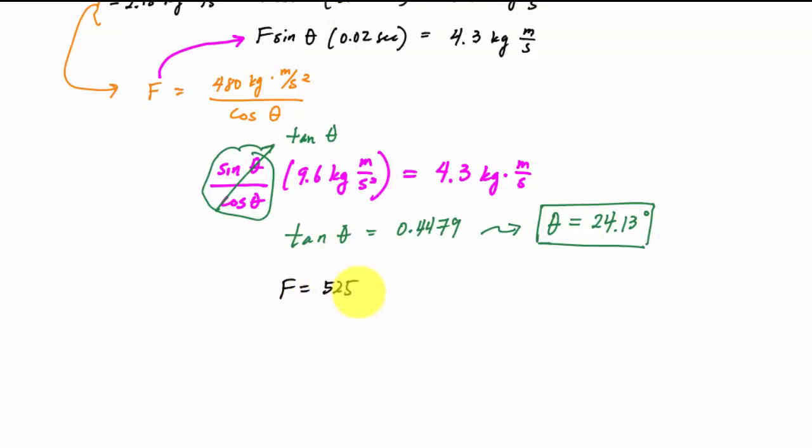It's 525.95 newtons. So for my final answer, you might write something like this: the force from my foot onto the ball, the average impulsive force, is 525.95 newtons at an angle of 24.13 degrees from the horizontal.